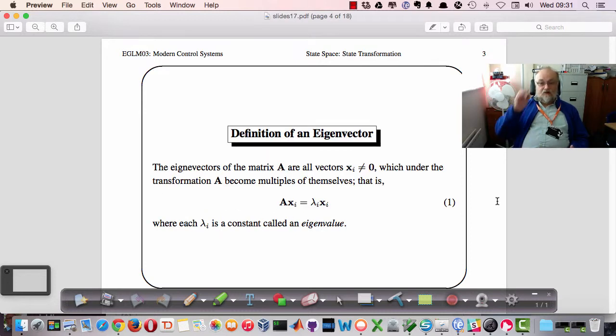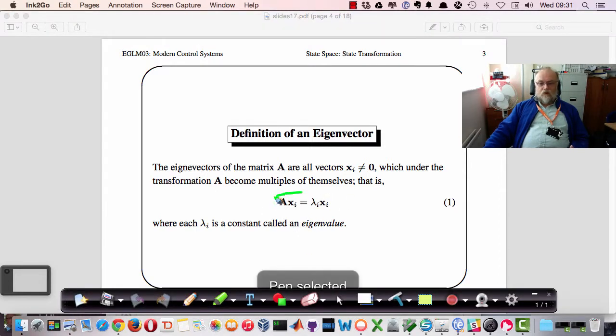We'll start off by defining eigenvectors. Eigenvectors of a matrix are vectors which satisfy this equation here. So we're looking for values of lambda that ensure that A times xi, where xi is the eigenvector, is equal to some multiple of lambda times xi. So that's called an eigenvalue, and the xi is the eigenvector.